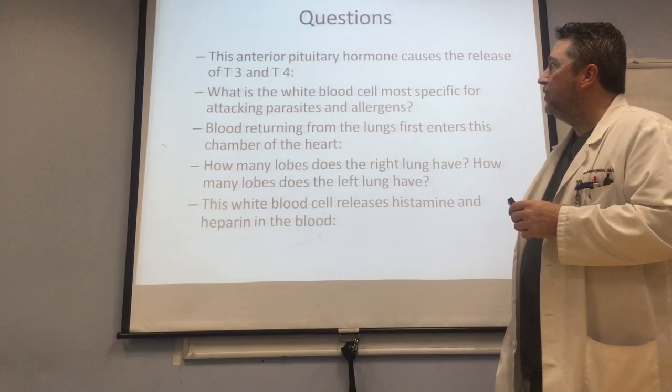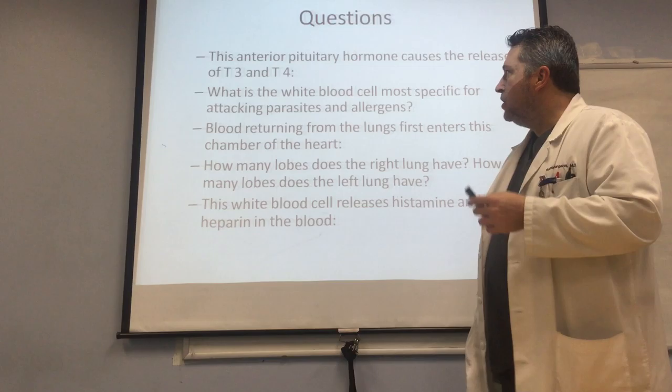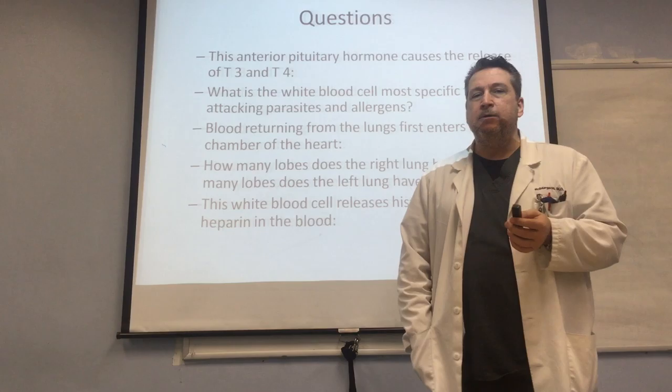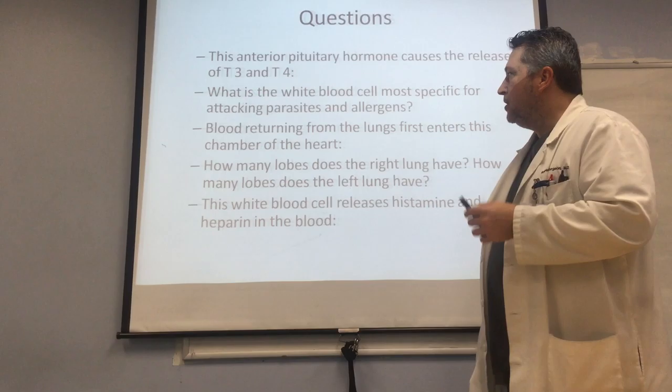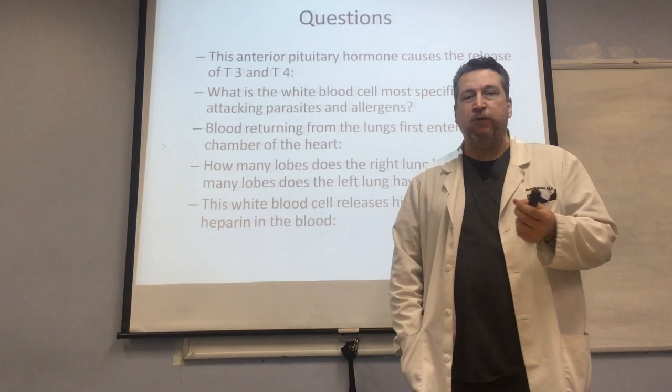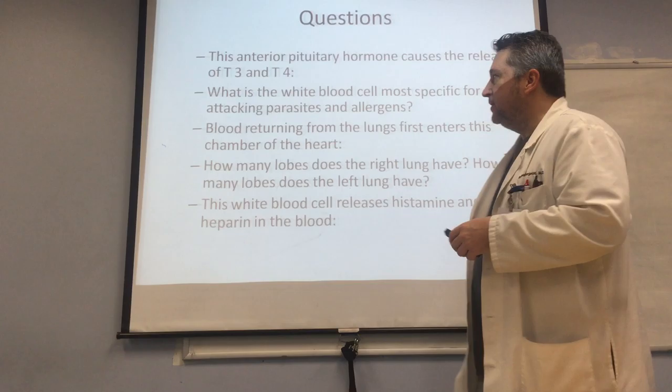This hormone coming from the anterior pituitary gland causes the release of T3 and T4 — that is the thyroid-stimulating hormone, TSH. The white blood cell most specific for attacking parasites and allergens is one of the granulocytes — specifically the eosinophils, which make up around one to two percent of all white blood cells. Blood returning from the lungs first enters the left atrium, because blood coming from the lungs has been oxygenated and returns to the left side of the heart to be delivered throughout the body.